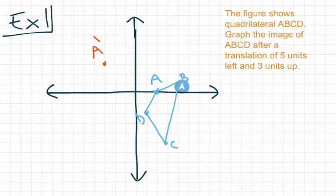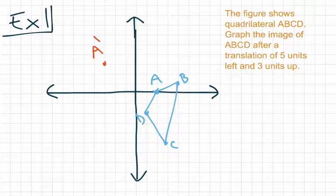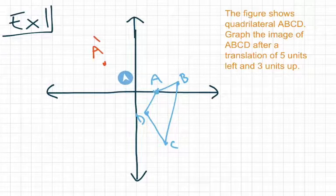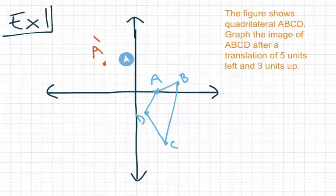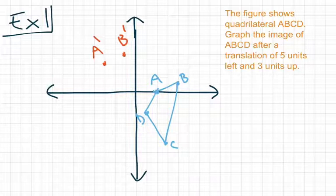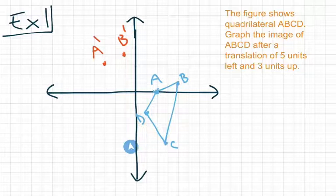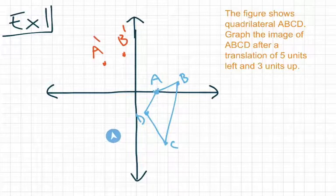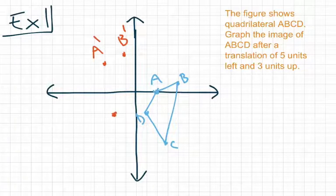Next, we're going to go on to point B. Five units left. One, two, three, four, five. And three units up, one, two, three. And that's where we put our point for point B prime. Next, let's move on to point C. Starting here, five units left. One, two, three, four, five. And then up one, two, three. To end up at negative two comma negative two. And we call that point C prime.